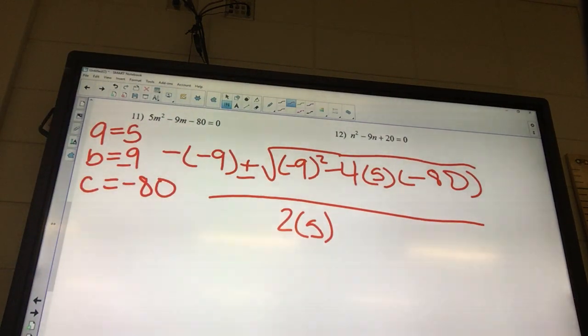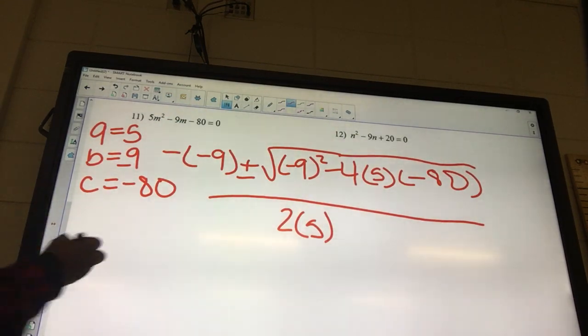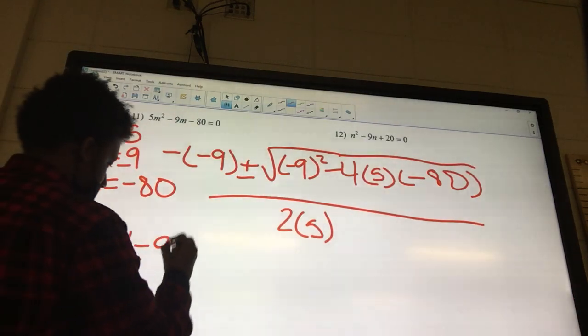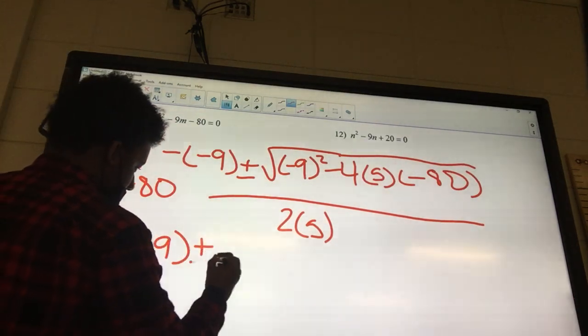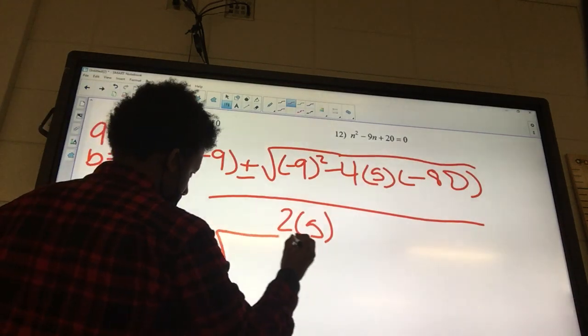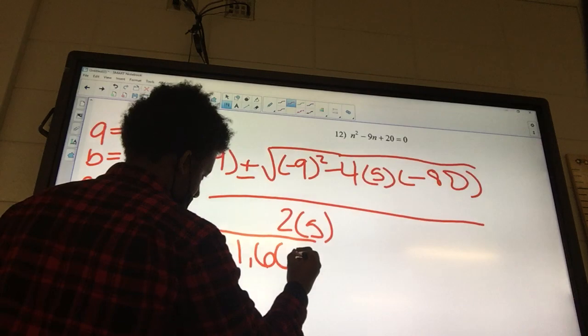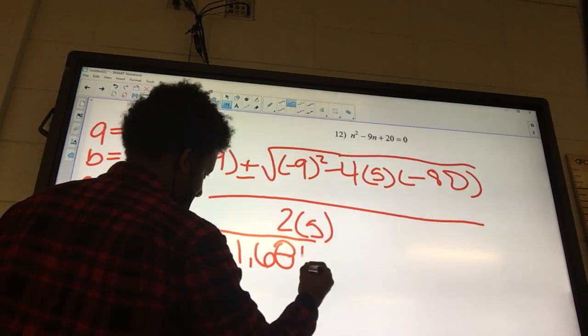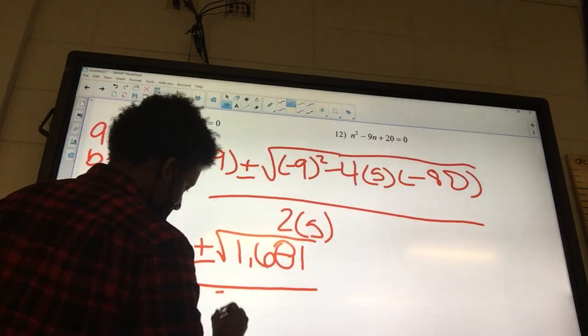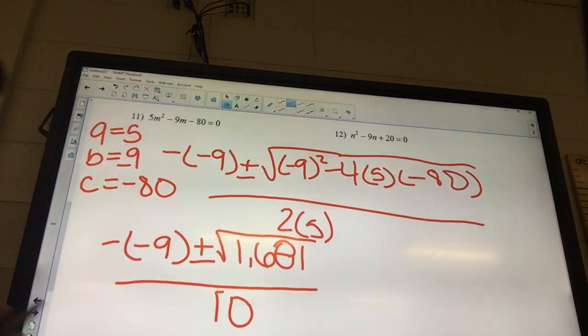Good. Okay. Somebody do the math for him. The back. 1,681. There you go. Good. 1,681. I'm assuming that's right. 1,681. Yeah. Over. 10. Good job, Jayden.